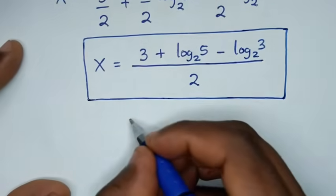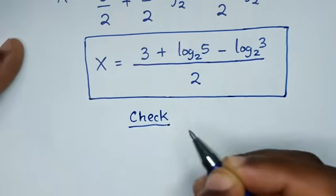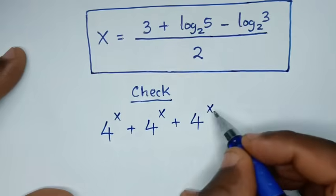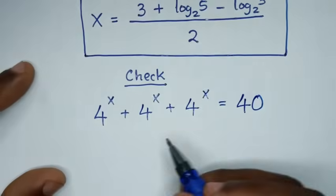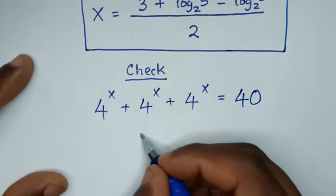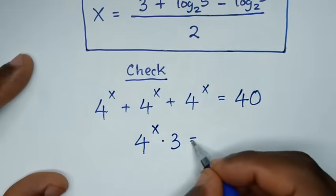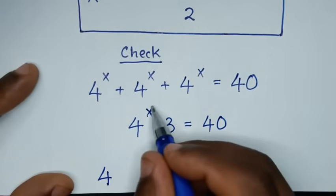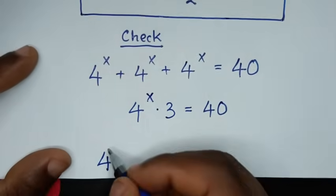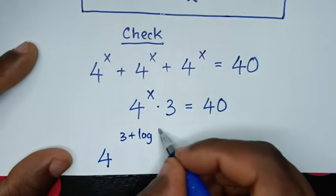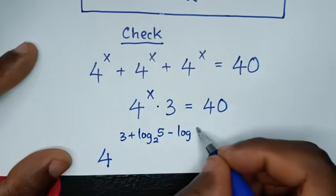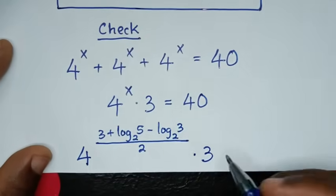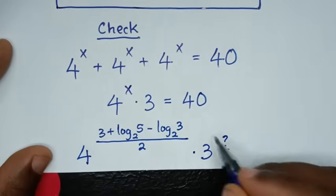Now let's check this answer. From our original problem, 4^x + 4^x + 4^x = 3 × 4^x = 40. Substituting x = (3 + log₂(5) − log₂(3)) / 2, we evaluate 4 raised to the power (3 + log₂(5) − log₂(3)) / 2, then times 3, to see if it equals 40.